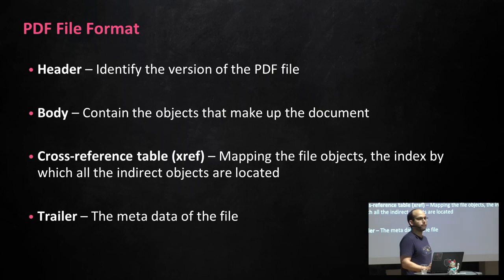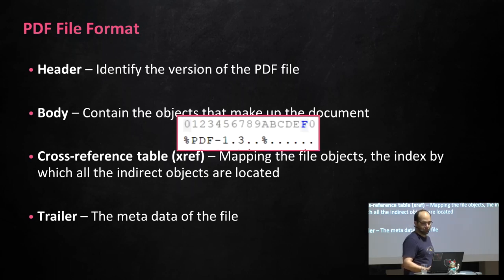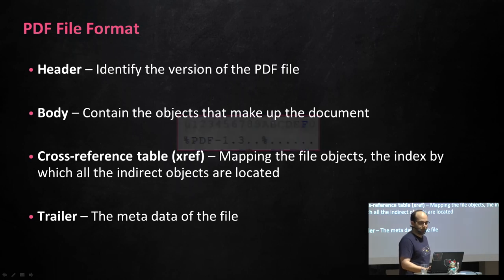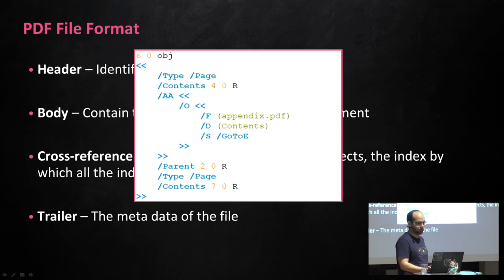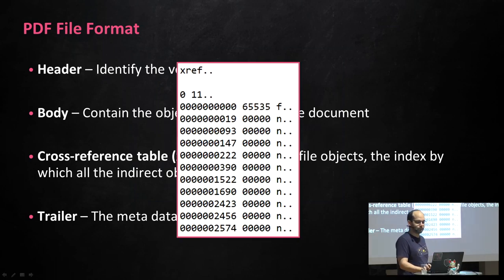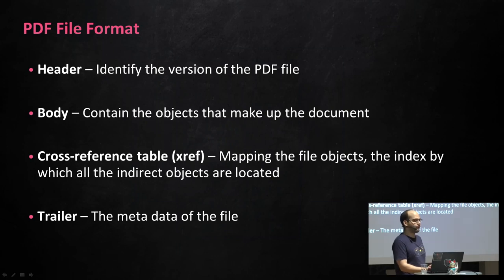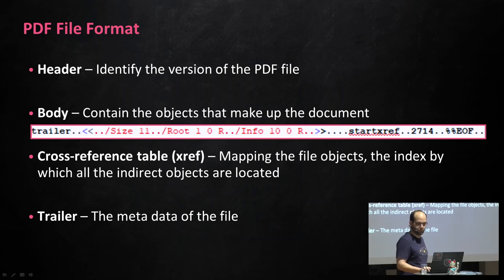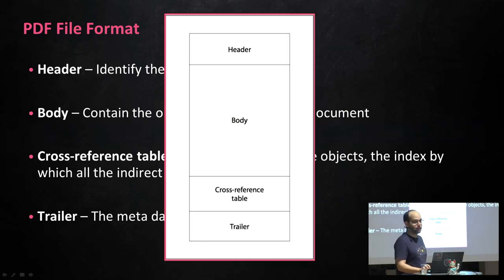The first component is the header, which contains the version of the PDF file — for example, this header notes that the PDF version is 1.3. Second is the body, which contains all the objects that make up the PDF — we've got several different objects such as page, contents, parent, and so on. Third is the Xref, also known as the cross-reference table, which contains info for how to access those objects. Finally, we've got the trailer, which contains the metadata of the PDF. Together, these four parts make up the PDF: header, body, Xref table, and trailer.